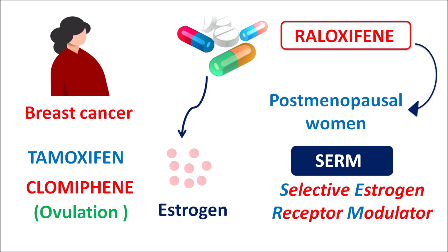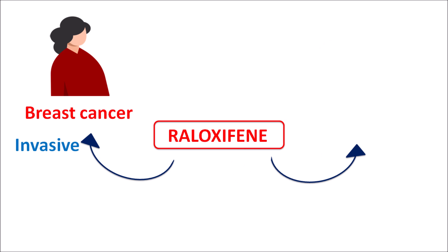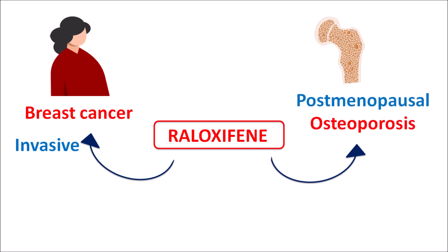Today in this video we are going to discuss Raloxifene, which is a Selective Estrogen Receptor Modulator. Raloxifene can be used in the treatment of breast cancer which is invasive in nature — that means it is highly spreading — and it can reduce the risk of invasive breast cancer. But the main clinical indication of this drug is in the treatment of osteoporosis in post-menopausal women. Since Raloxifene can act as both agonist as well as antagonist on estrogen receptors, it can be used in the treatment of osteoporosis as well as the management of invasive breast cancer in post-menopausal women.